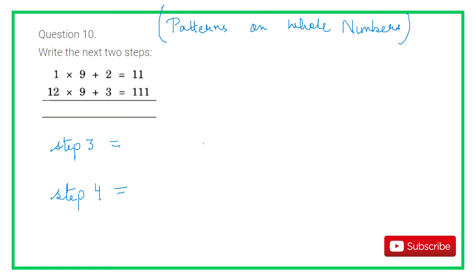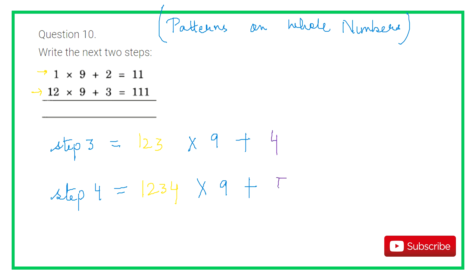Looking at the pattern: the number 9 and the plus operation are constant. What changes is the first number — it goes from 1, to 12, so the next step is 123. The added number goes from 2 to 3, so next is 4, then 5. And the result goes from 11 to 111, so next is 1111, then 11111. So step 3 is 123 into 9 plus 4 equals 1111, and step 4 is 1234 into 9 plus 5 equals 11111.